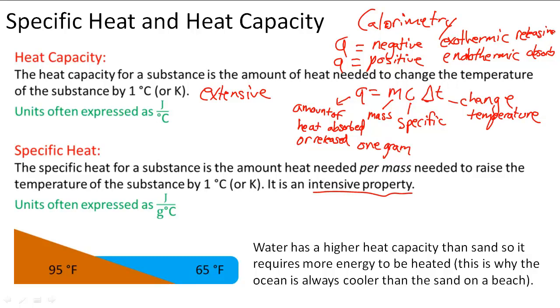We can use the specific heat of substances to tell us this Q value which is the amount of heat absorbed or released by the substance when it's changing temperature.